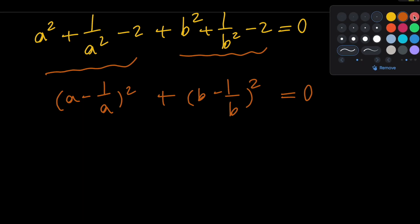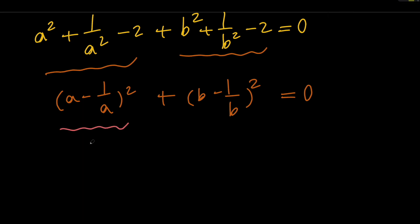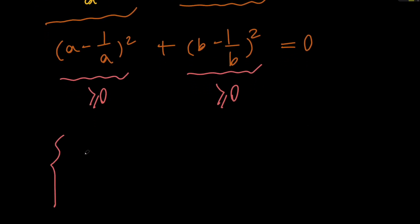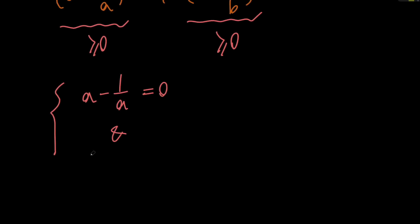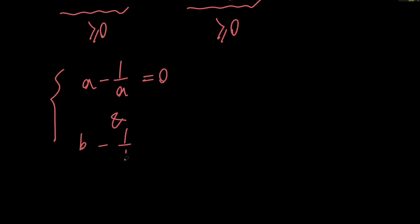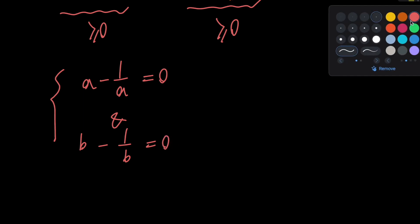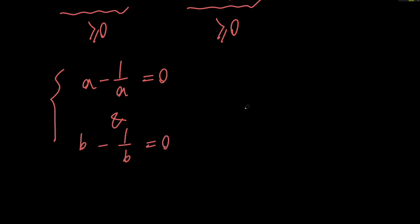Now we know that the first group is (a minus 1 over a) all squared, and the second is (b minus 1 over b) all squared, and their sum is equal to 0. Since both are non-negative, and their sum is 0, both of them must individually equal 0. So we have a minus 1 over a equals 0, and b minus 1 over b equals 0.